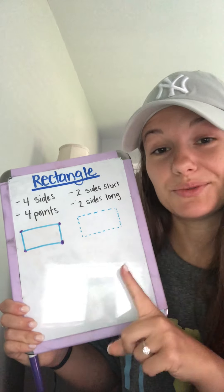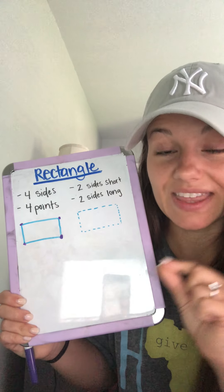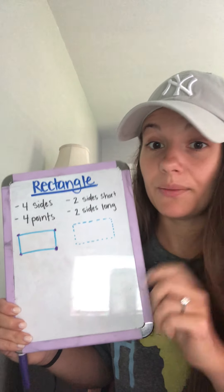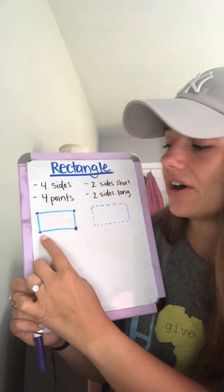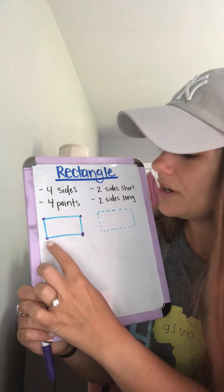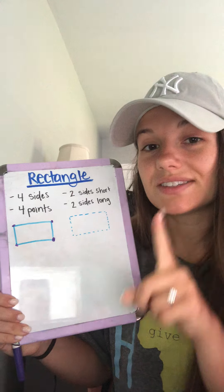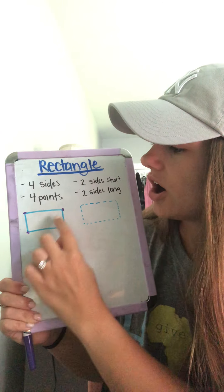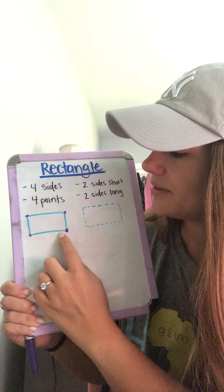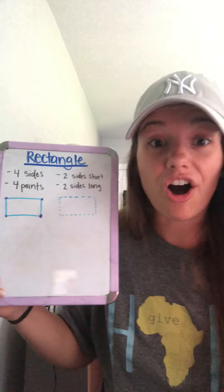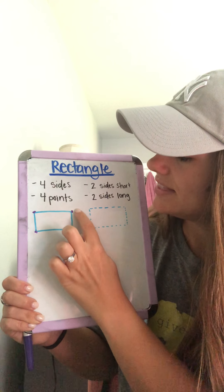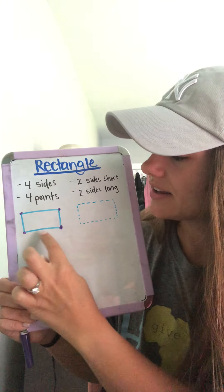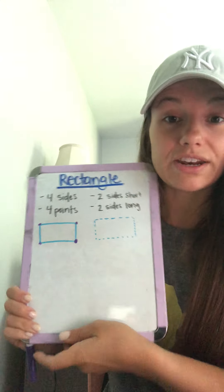Here's the difference between a rectangle and a square, and this is really important because they're two different shapes. Two of the sides on a rectangle are longer than the other two. Do you see how the bottom side and the top side are long, and the left and right sides are short? Those sides are shorter than these sides, and that's how you can tell the difference between a rectangle and a square.